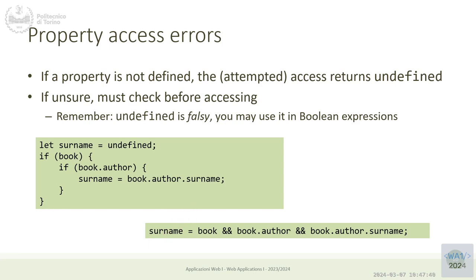In other languages, accessing a non-existing property throws an exception, so you'd use try-catch. That makes sense when not knowing a property is a corner case — an error condition. But in JavaScript it's much more common that an object may or may not have a certain property, so returning undefined is more flexible. We must remember to check for undefined values rather than catching exceptions.